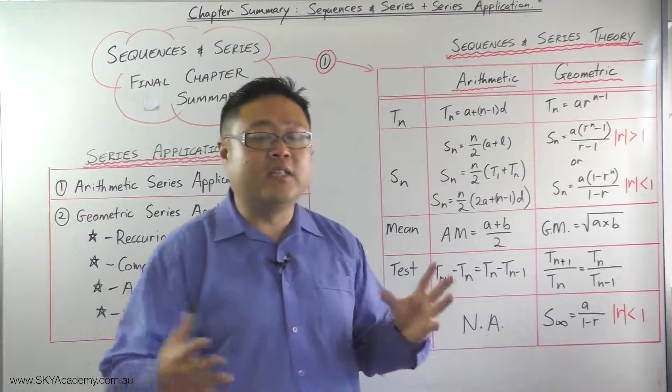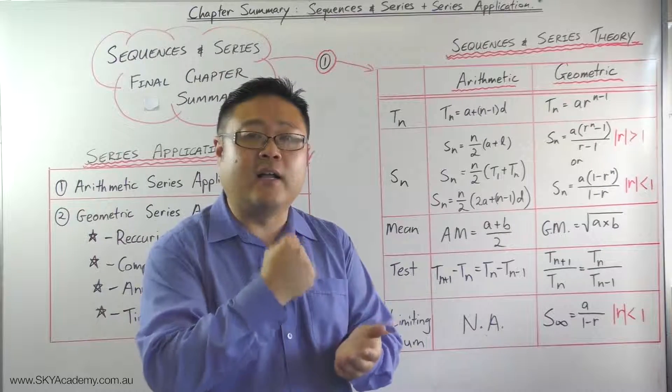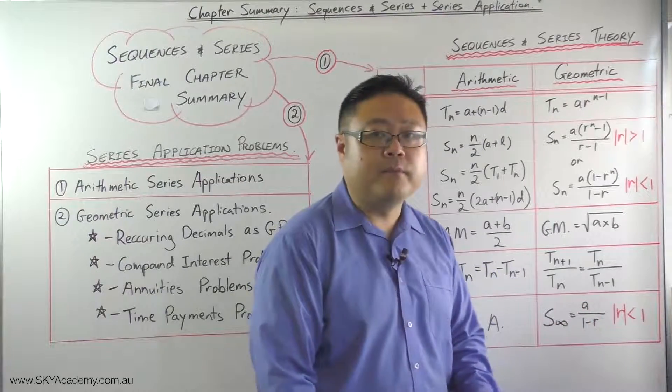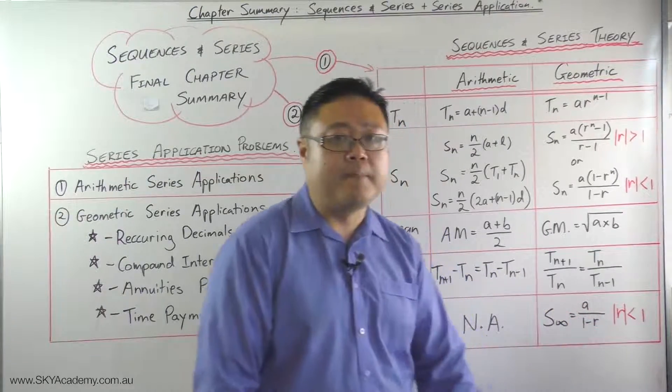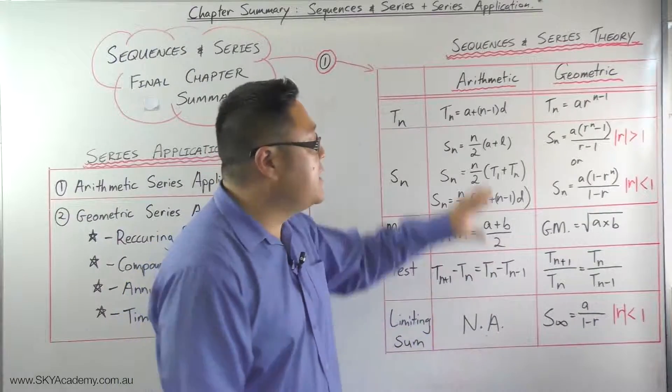It converges to a limiting sum or a limiting value which is given by the formula a over 1 minus r, a being the first term, r being your common ratio.